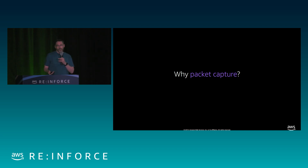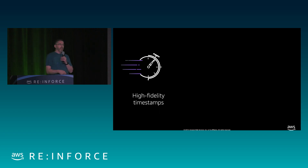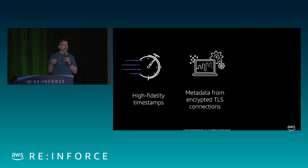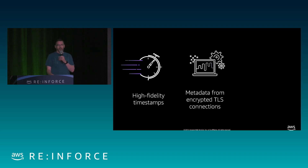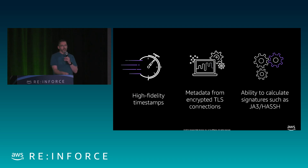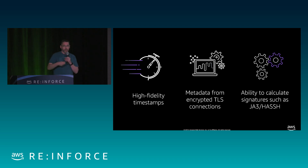Why was packet capture compelling for us? We've been doing packet capture in legacy on-premises environments for a long time. Compared to flow data like VPC flow logs, packet capture provides high-fidelity timestamps that allow us to accurately reconstruct event timelines. Even though 90% of traffic is now encrypted — TLS, SSH — we can still extract metadata like certificates and ciphers being used. We can generate on-the-fly JA3 and HASSH signatures to profile the clients and libraries we observe in our environments. Packet capture still plays a very important role for us.